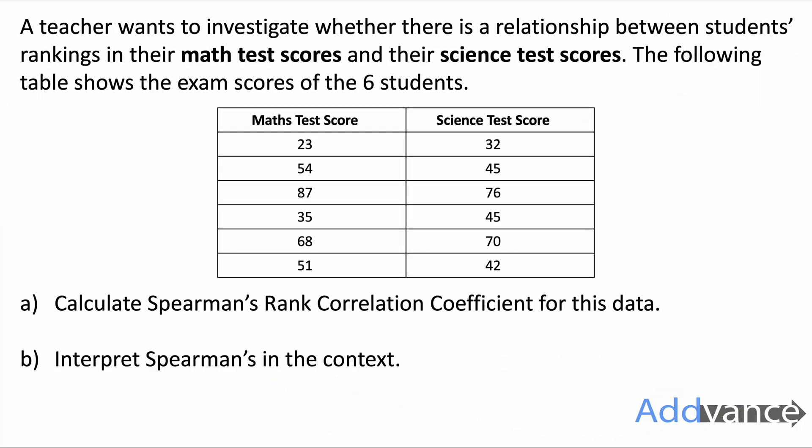Let's look at an example of finding Spearman's. A teacher wants to investigate whether there is a relationship between students' rankings in their maths test scores and their science test scores. The following table shows the exam scores of six students. We're going to calculate Spearman's rank correlation coefficient for this data and interpret it in the context of this question.